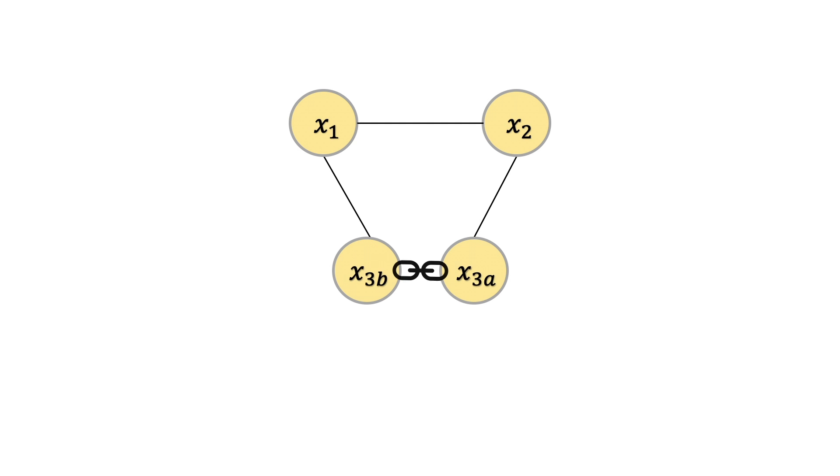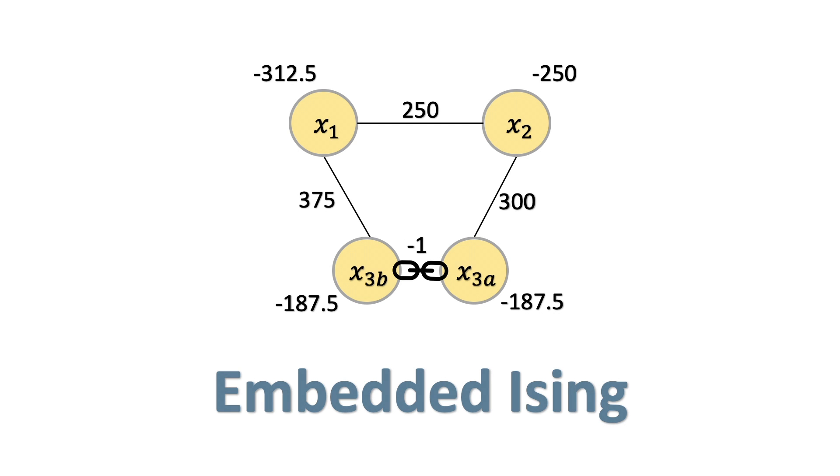With node and edge weights, this four qubit embedded problem now looks like this. We've stretched out our logical variable 3 across two connected qubits, which we'll call 3a and 3b. These two qubits 3a and 3b are what we call a chain since they act together like one of our logical variables.